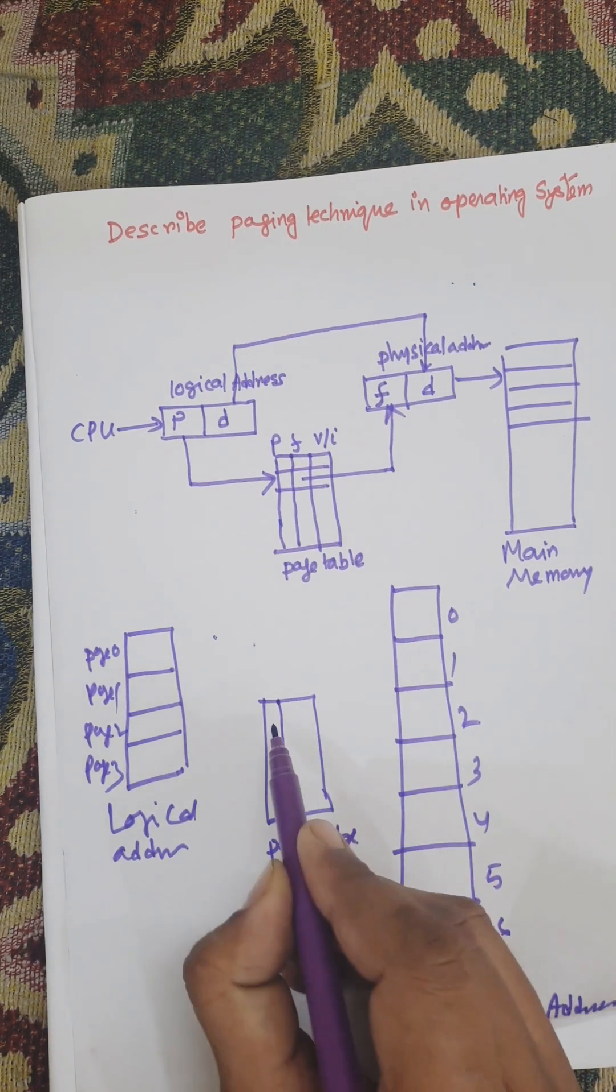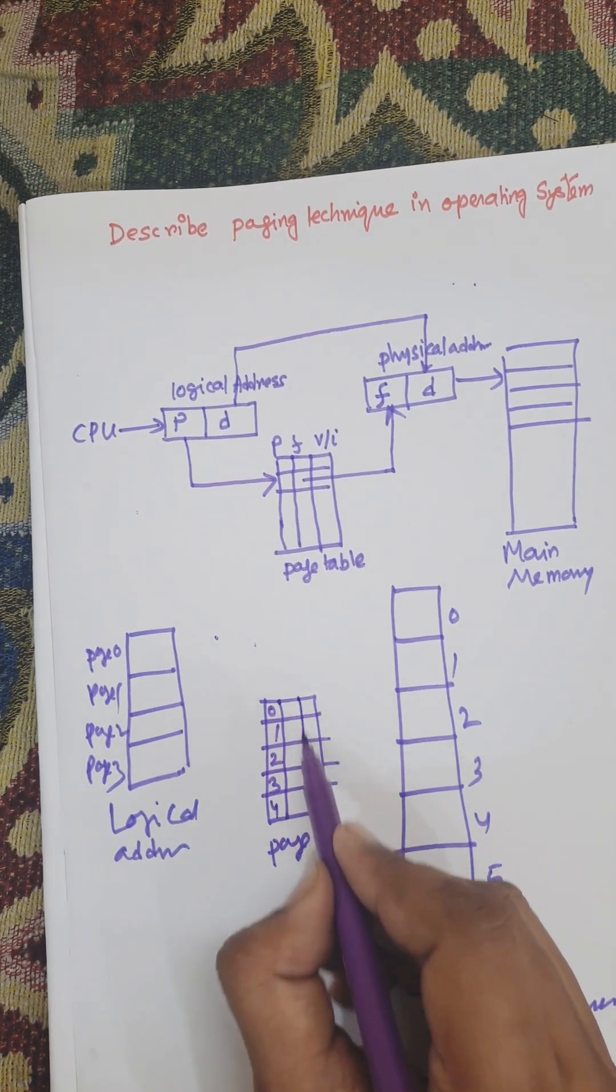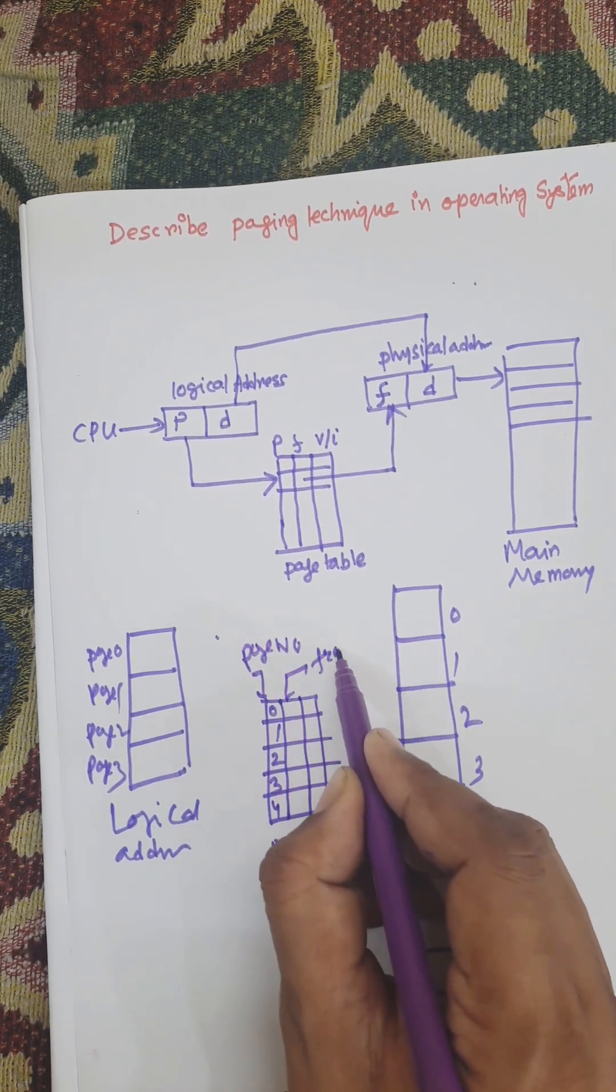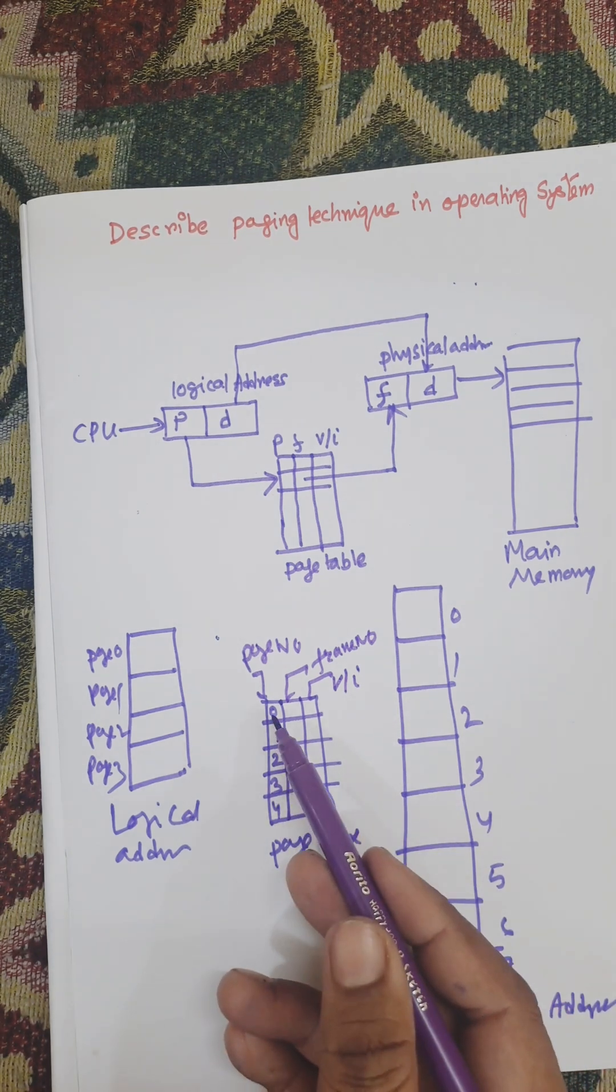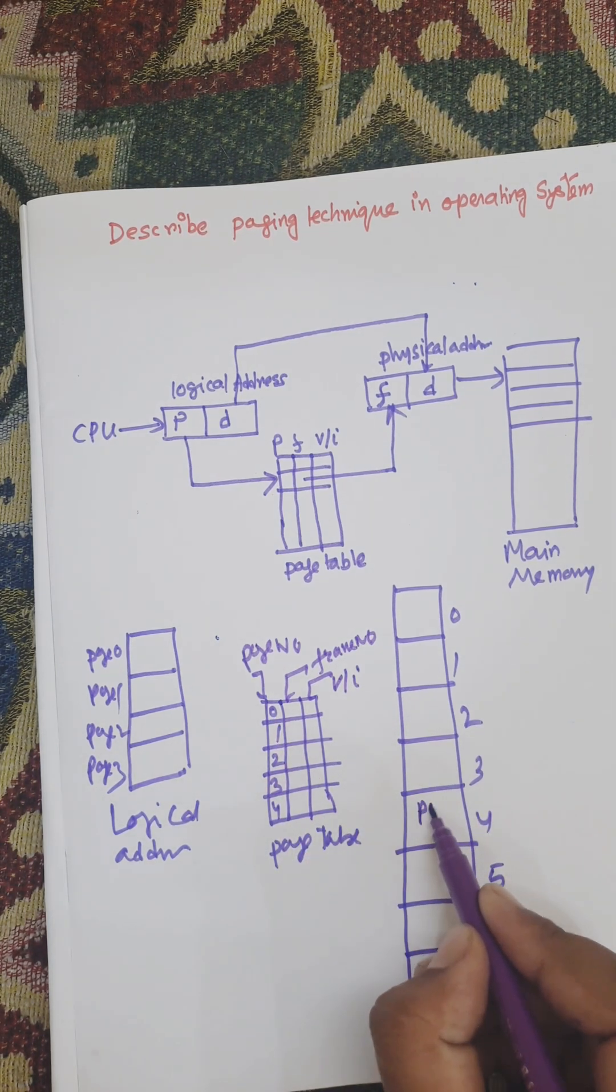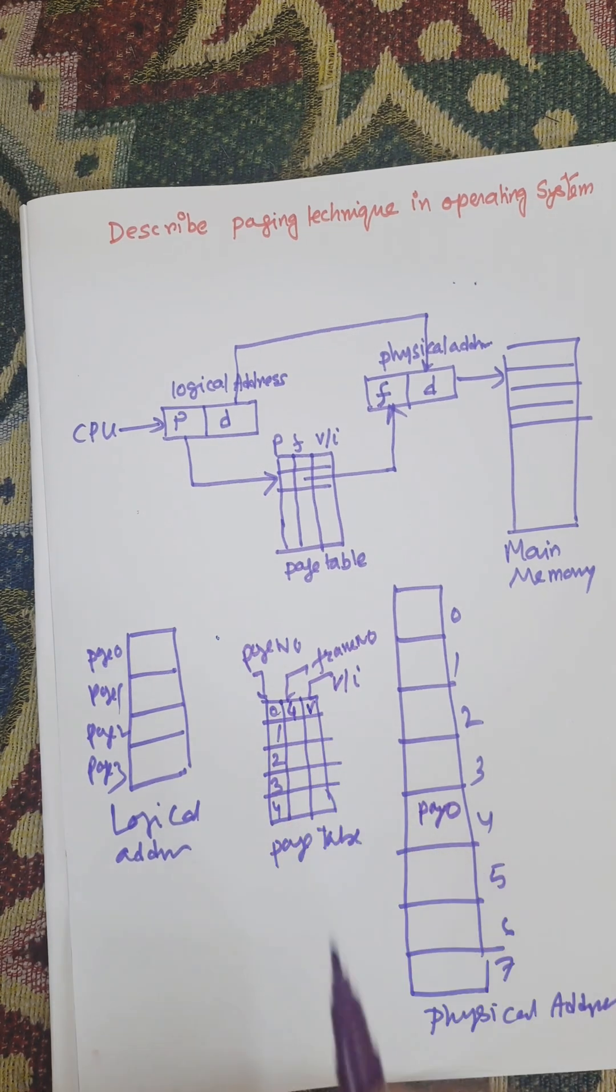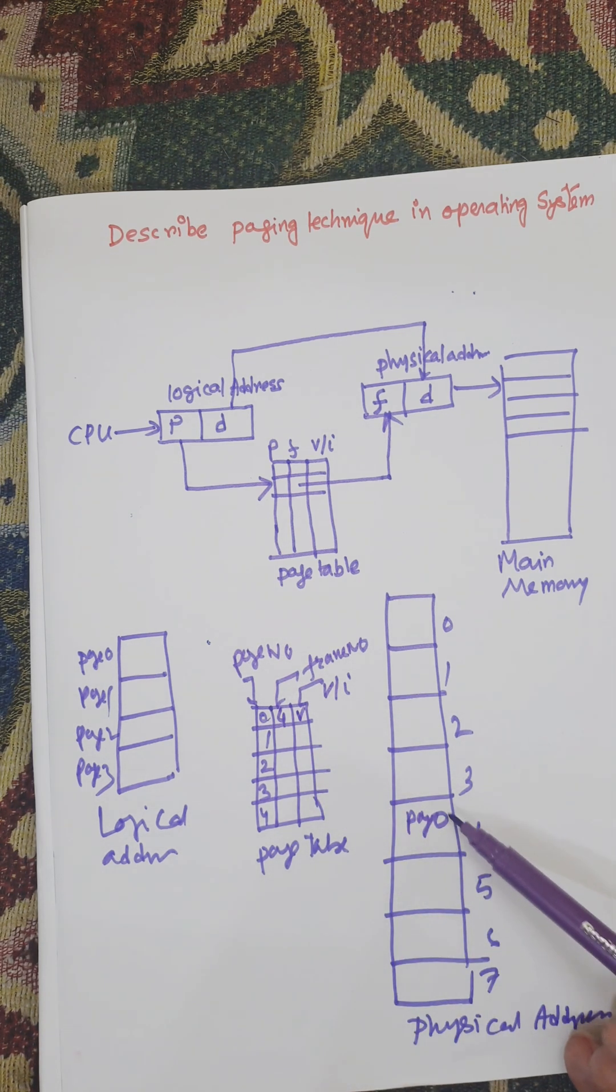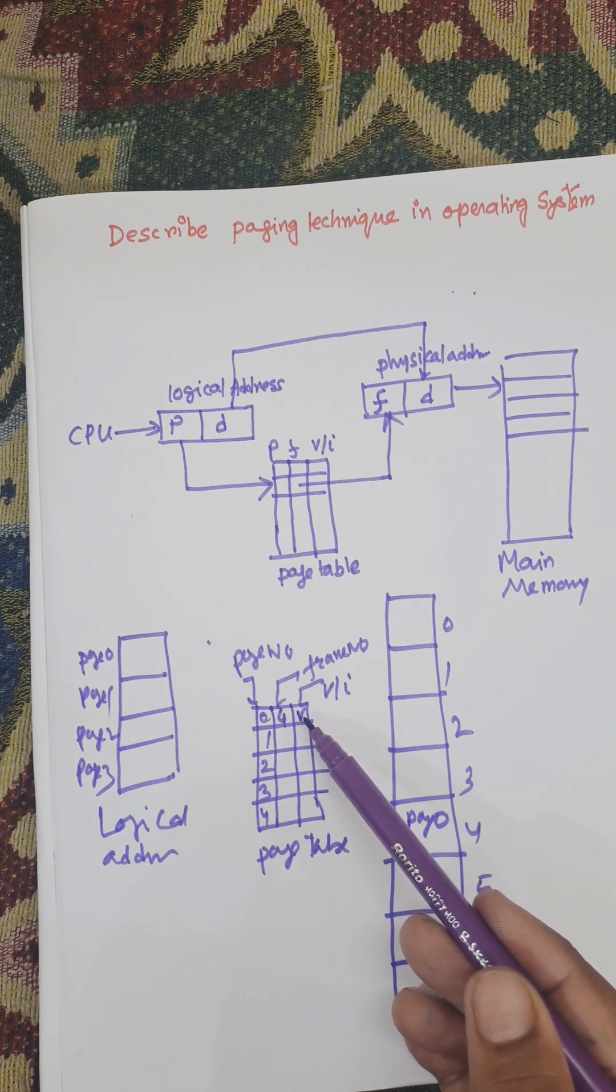Suppose these are the page numbers: 0, 1, 2, 3, 4 and these are the frames. This is the page number, this is the frame number and this is valid-invalid bit. The page number 0, suppose page number 0 is loaded into location 4, so 0 will be updated with 4 and this is V. So this is the technique here, page is mapped to frame. When the page is mapped to frame number 4, frame will be updated with 4 and this is V for valid.